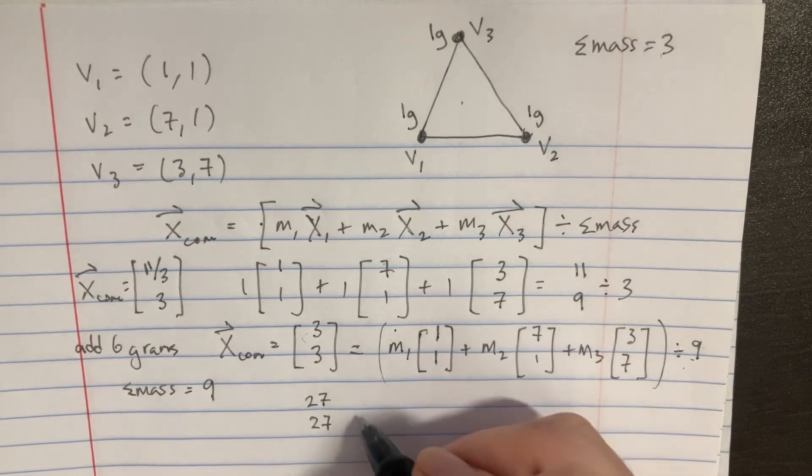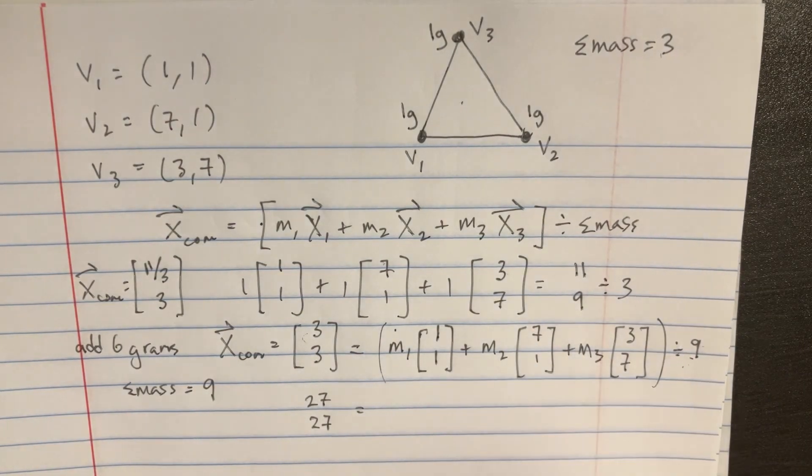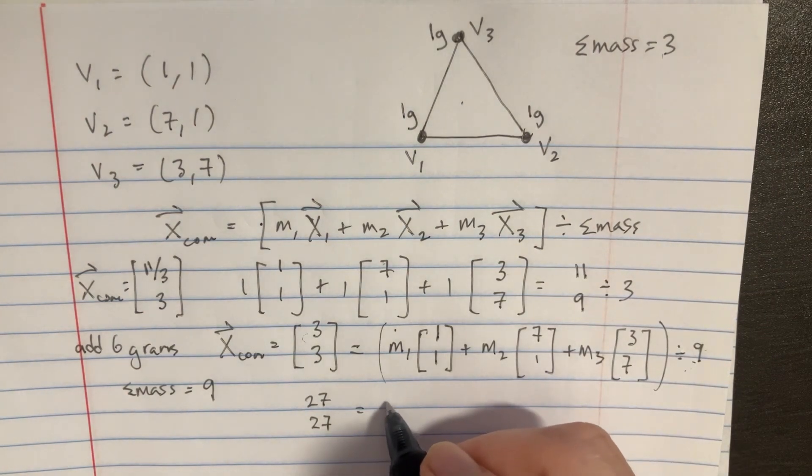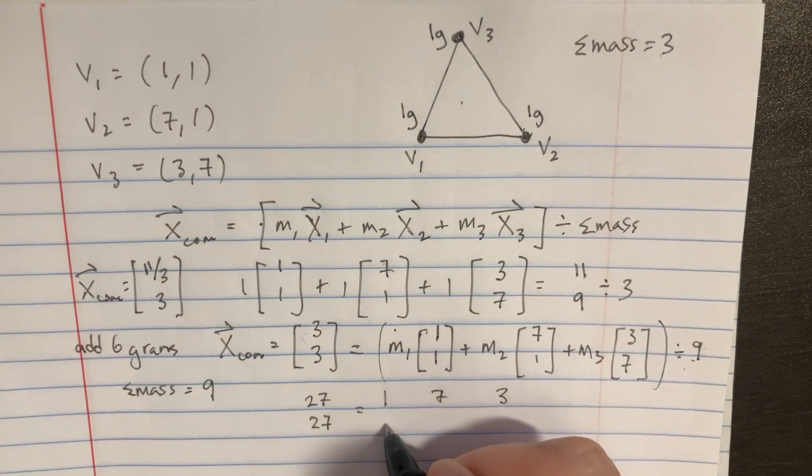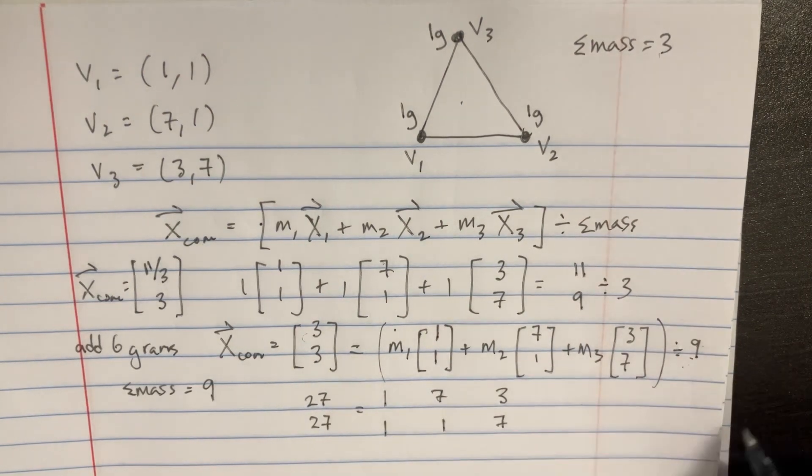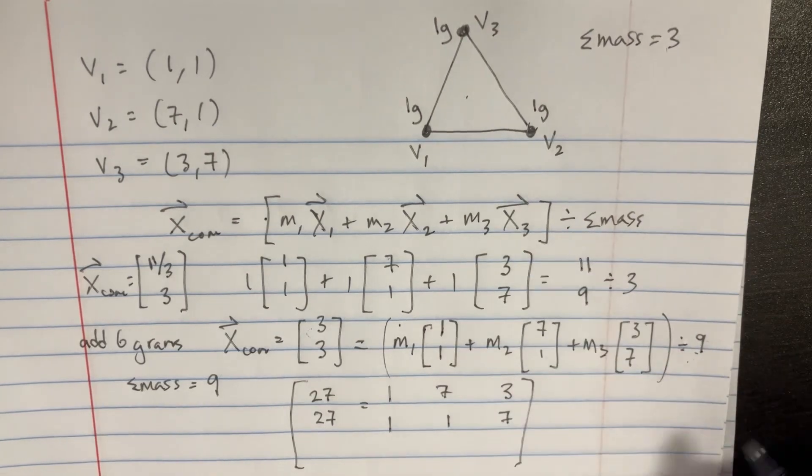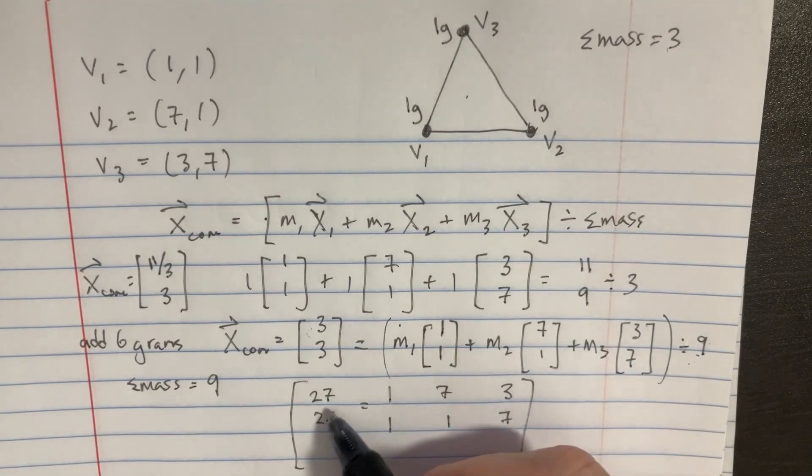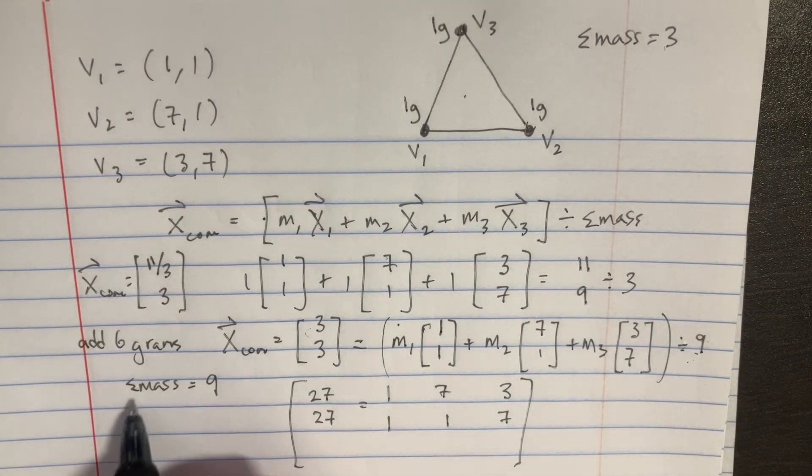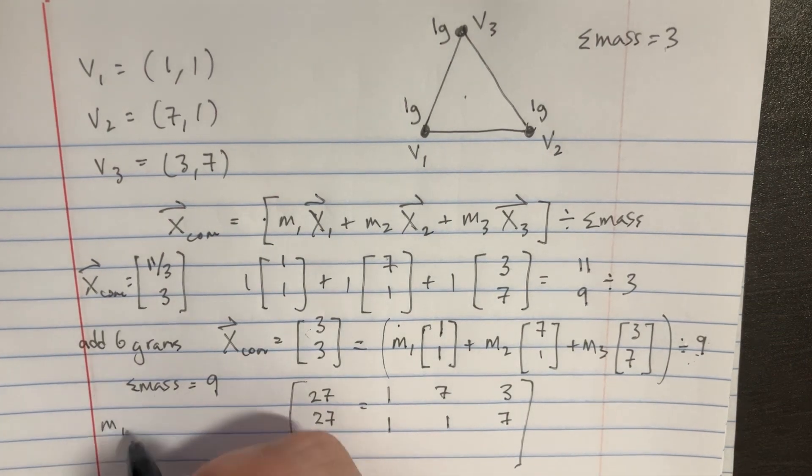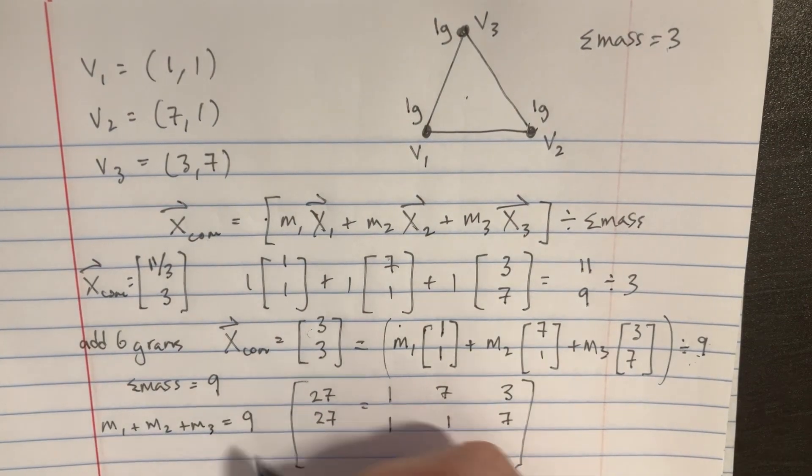And then that would be equal to, well, I'm going to get rid of these m's for now. But it's just going to be 1, 7, and 3. And then that would be 1, 1, 7. Now, we're close to making a matrix here. This obviously would go on to the other side. And let's realize we have one last piece of information.